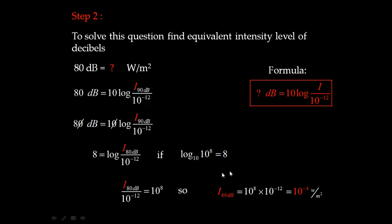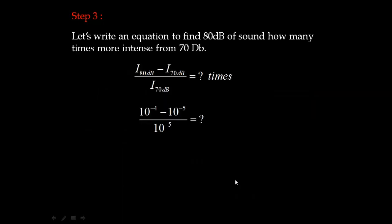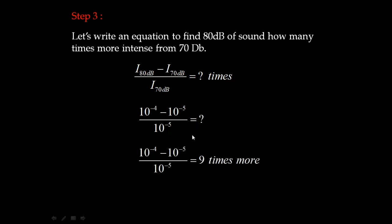Now we know the intensity level of 80 decibel and the intensity level of 70 decibel. Substituting them: 10 to the power of minus 4, minus 10 to the power of minus 5, divided by 10 to the power of minus 5, gives us how many times the difference is between them. We will see that 80 decibel is 9 times more intense than 70 decibel.